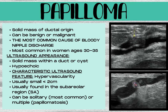A breast papilloma is a solid mass of ductal origin, and it can be either benign or malignant. In the female breast, they're most commonly benign, and in the male breast, they're more likely to be malignant. Papillomas are the most common cause of bloody nipple discharge, and they're most common in women ages 30 to 35.